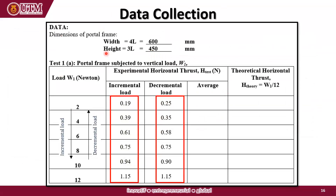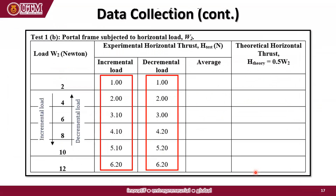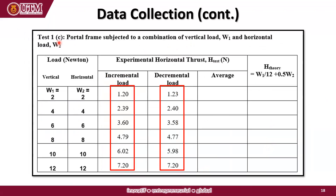This is the table for data collection. Record the width and height of the frame. Table 1A is for the portal frame subjected to vertical load — record the horizontal thrust for incremental loading and decremental loading, then calculate the average and theoretical horizontal thrust. Table 1B is for the portal frame subjected to horizontal load W2 — calculate the average experimental horizontal thrust and the theoretical value. Table 1C is for the combination of vertical and horizontal loads — again record the incremental load data, calculate the average, and then the theoretical horizontal thrust.